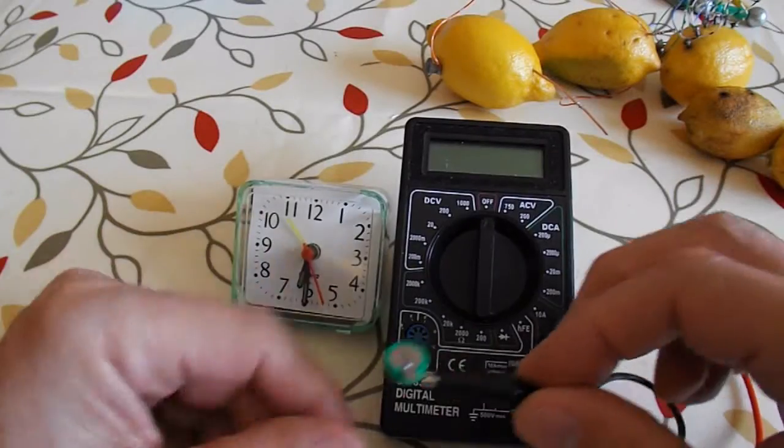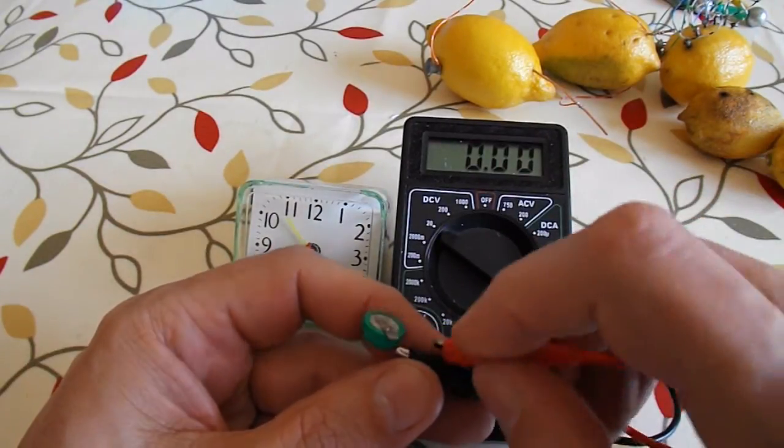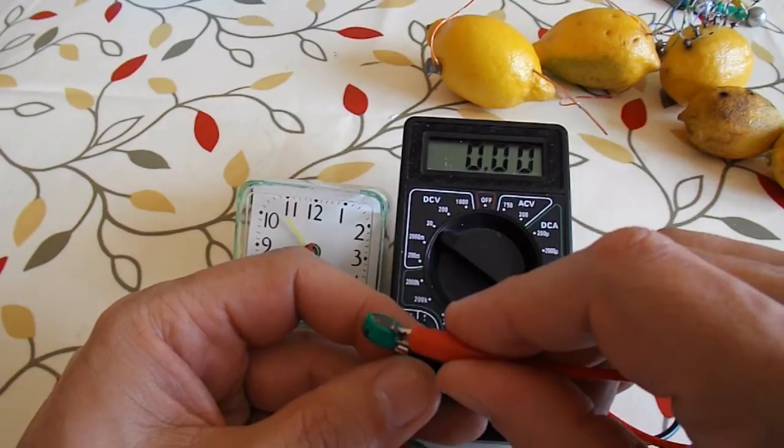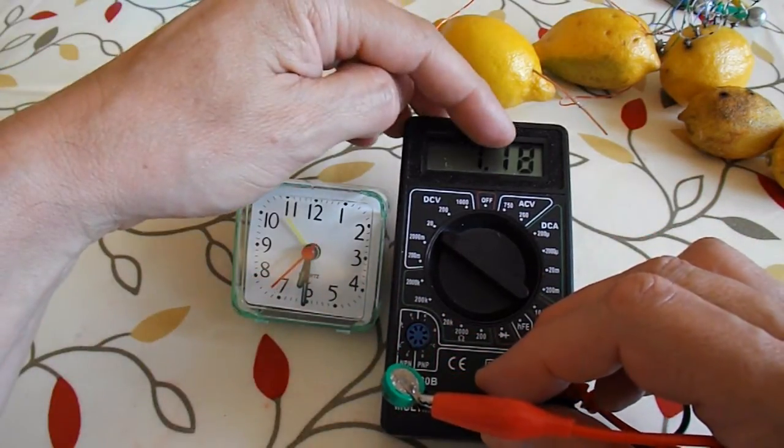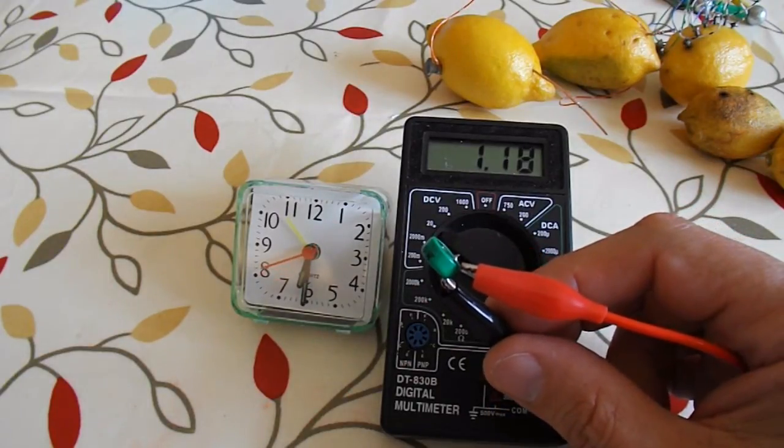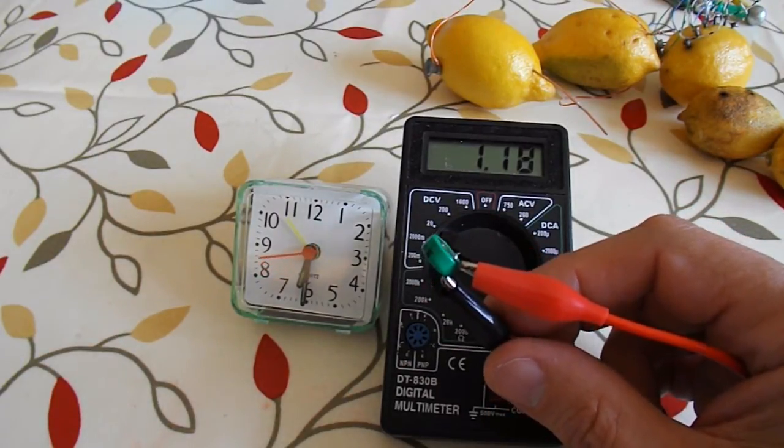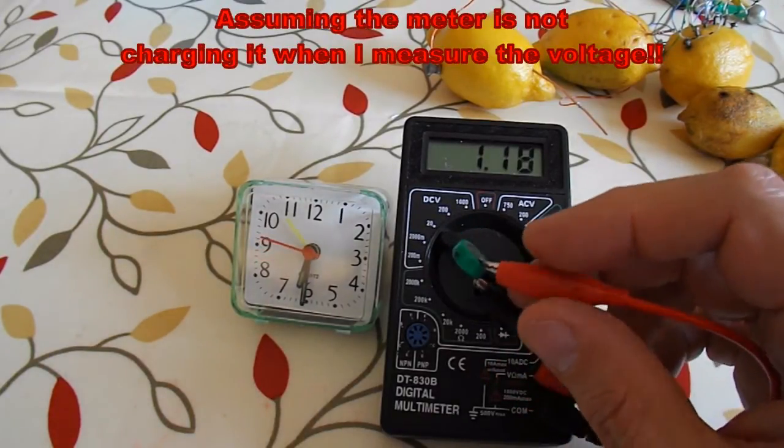It's about half past six now. If I measure the voltage on the battery, we're up to 1.18. So it's actually regained about 0.1 of a volt all on its own without any charge going into it from any external source.